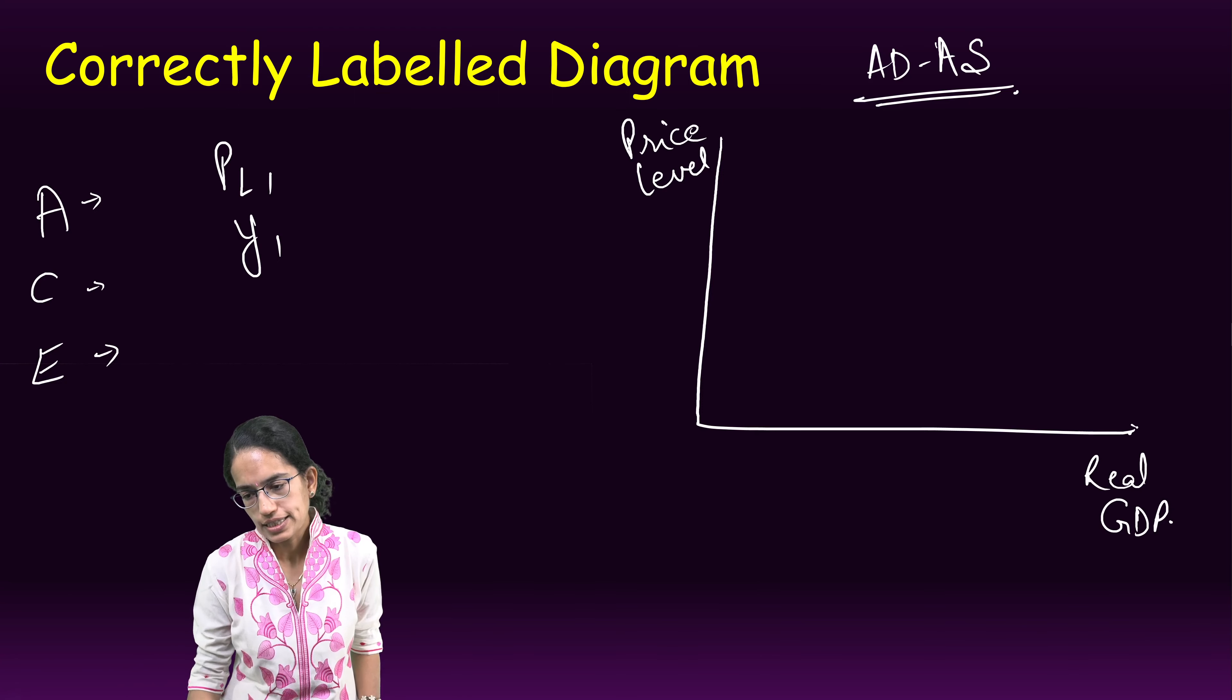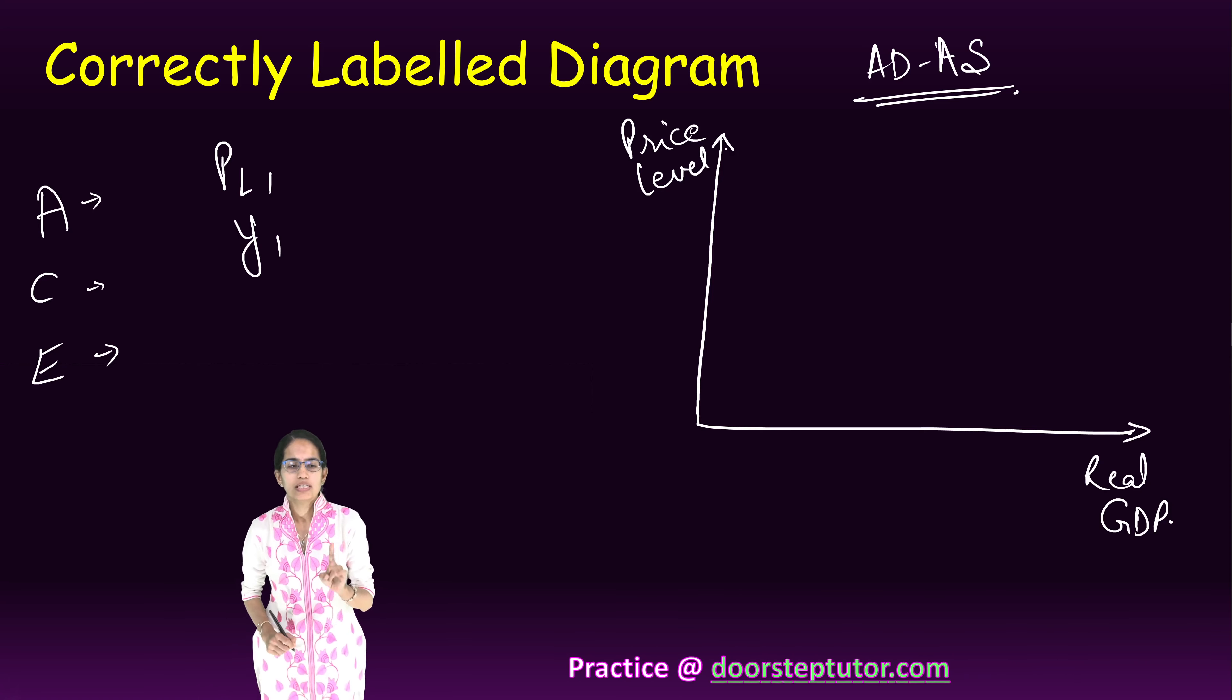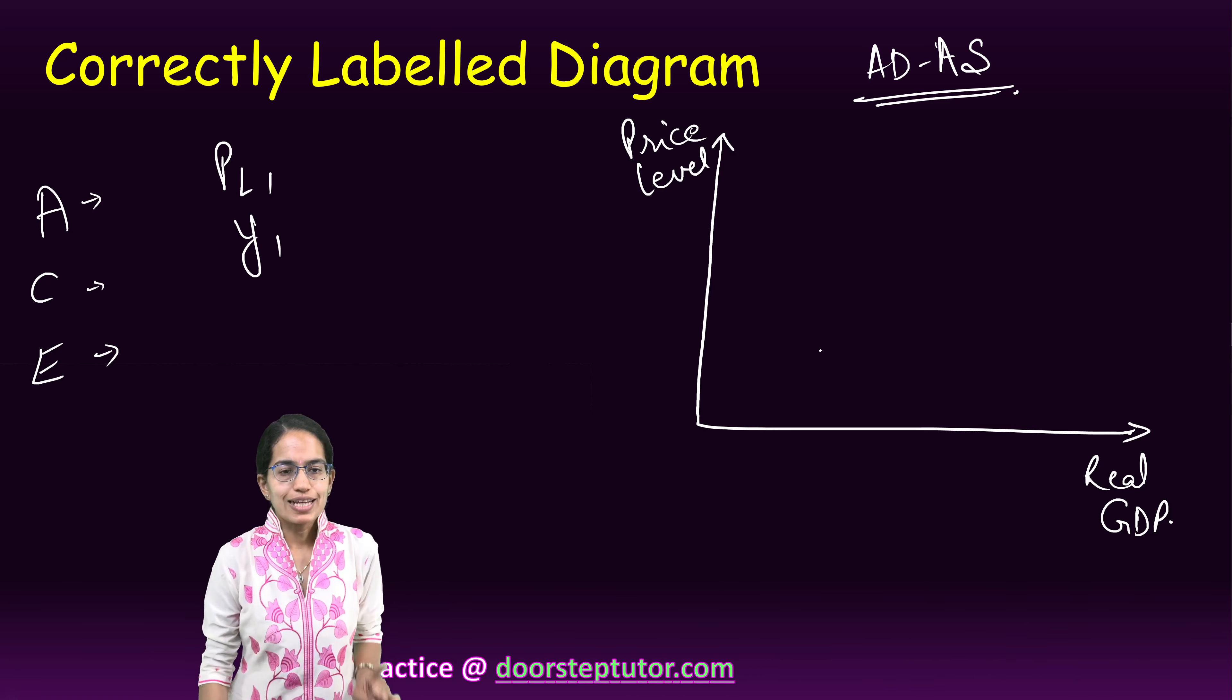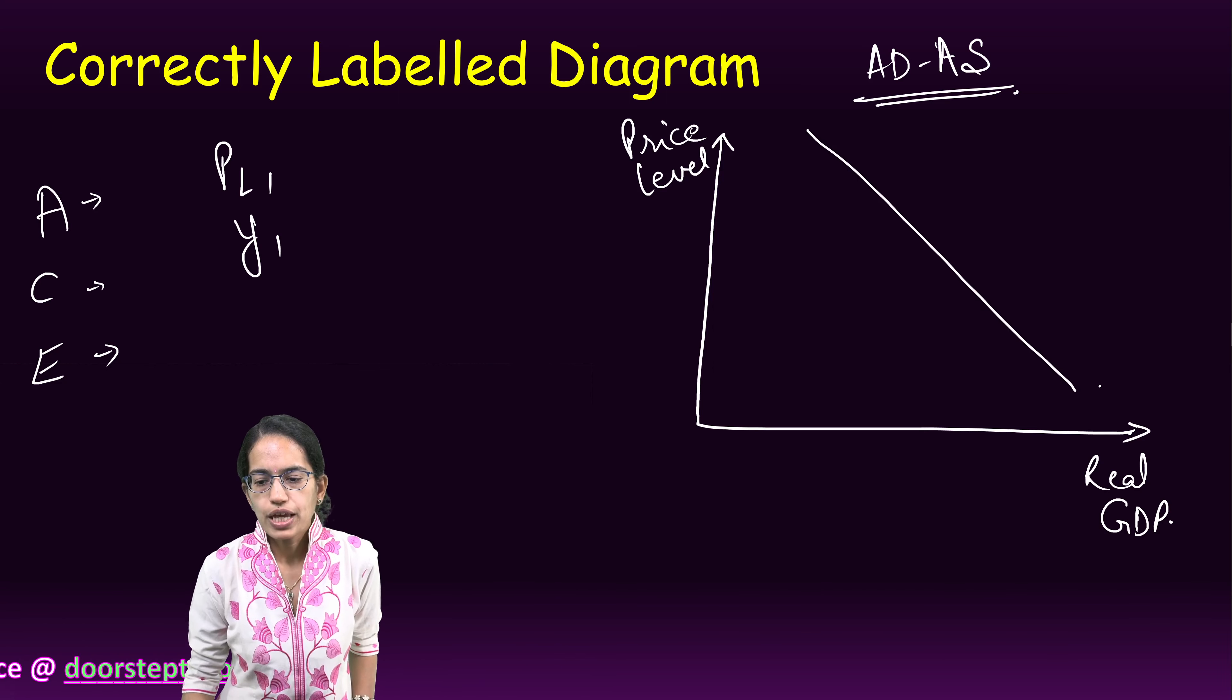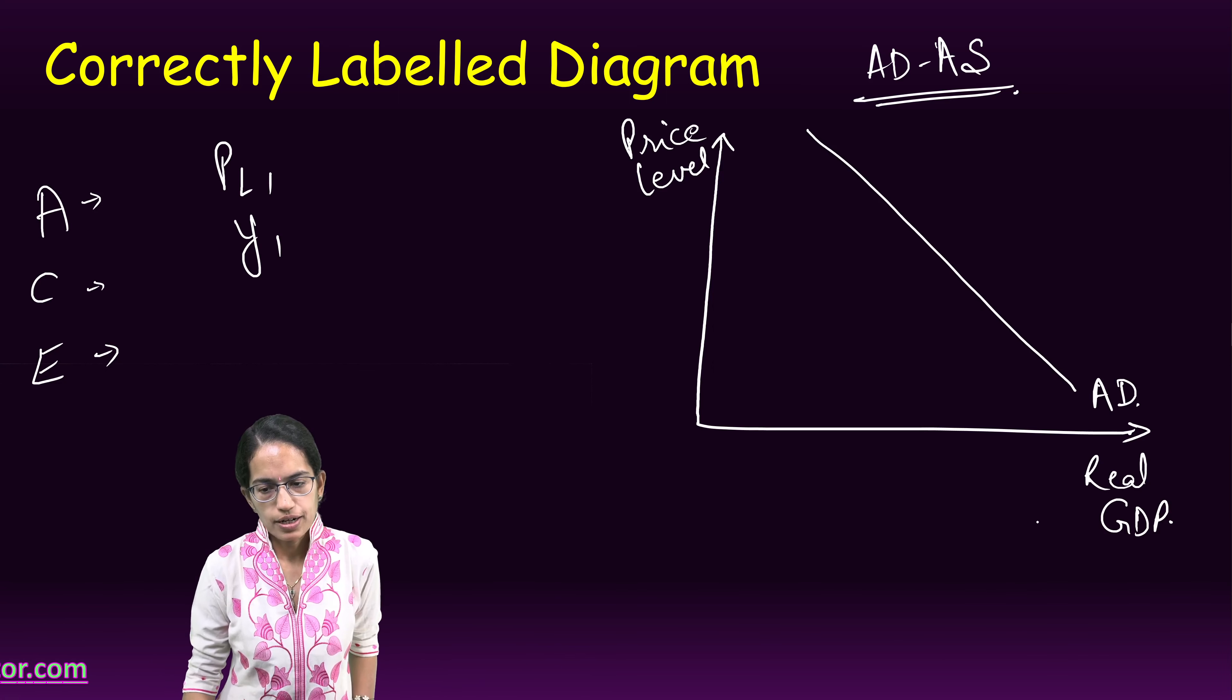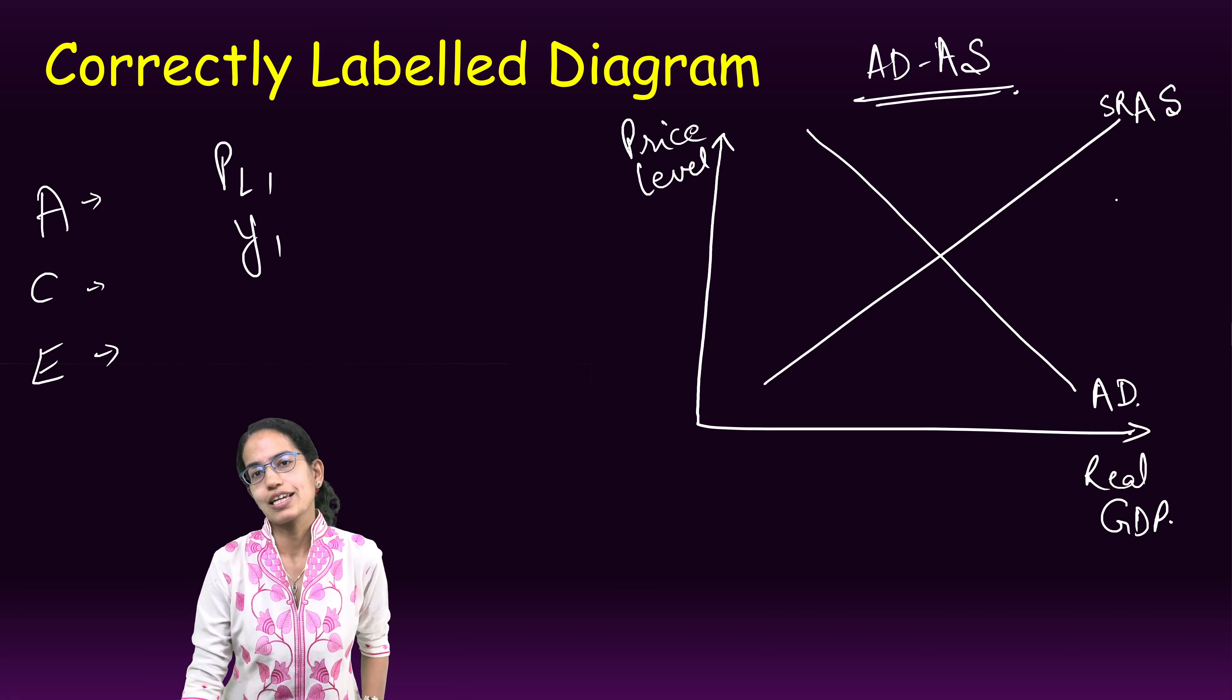Real GDP on the x-axis, price level on the y-axis. The marking for this is important. The next marking: since it's an aggregate demand and aggregate supply curve, we have the curve for aggregate demand. We also draw a curve for aggregate supply, but note we cannot write aggregate supply—we have to write short-run aggregate supply.